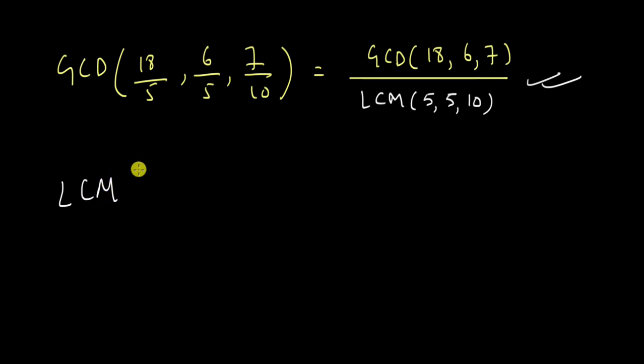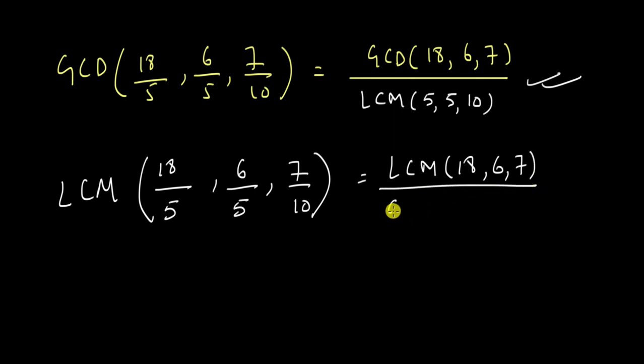final interesting fact before I end this video, is that if we wanted to find the LCM of these three fractions or any three fractions for this matter, the formula would just reverse. So we would have LCM on top 18, 6 and 7 and we would have GCD on the bottom. Again, let's use a different color. GCD of 5, 5 and 10. So I'm not going to solve this for you, but just wanted to let you know all these formulas that we can use to find the GCDs and LCMs of fractions.